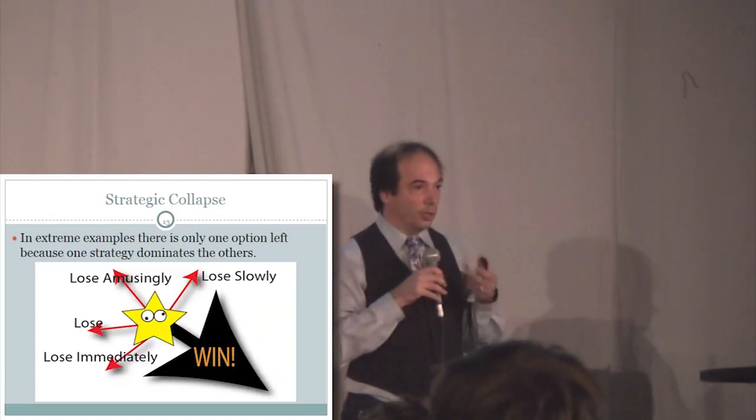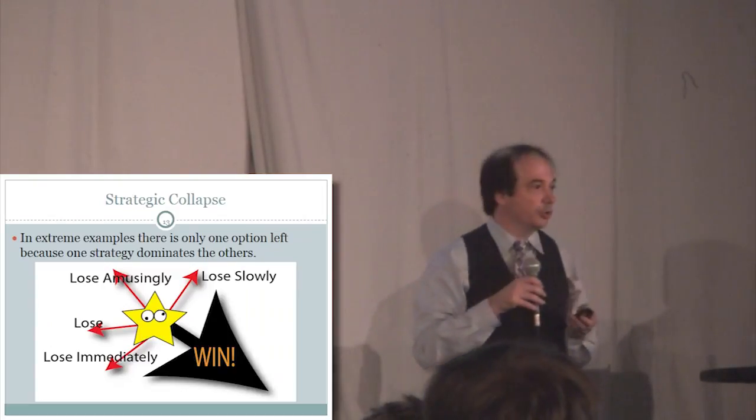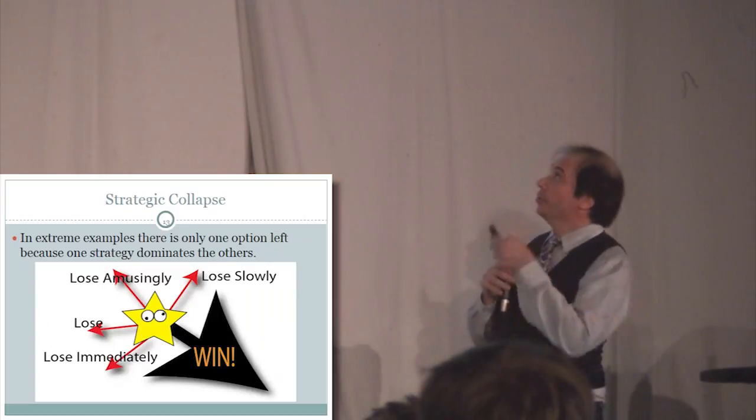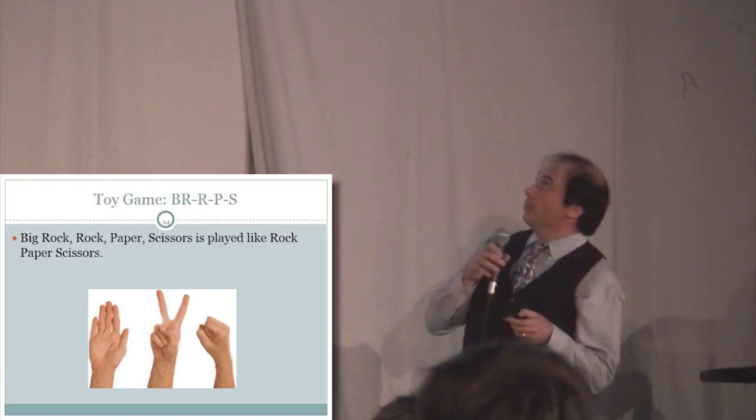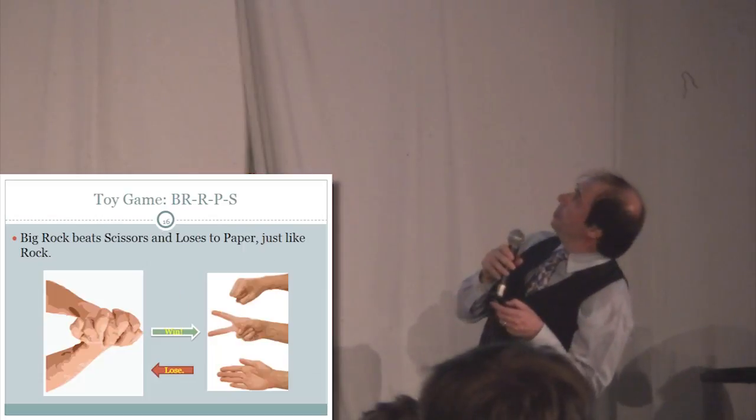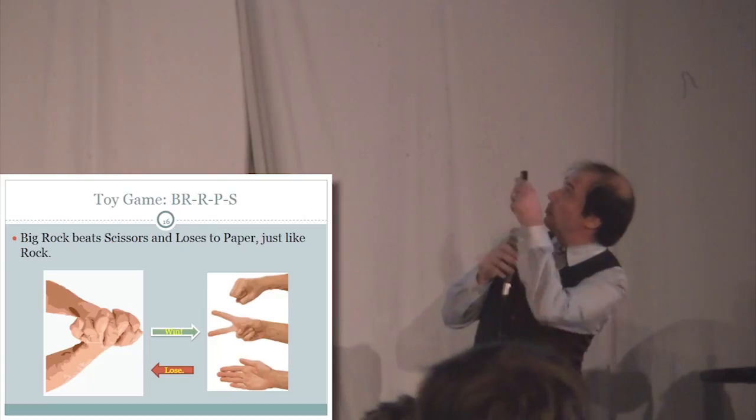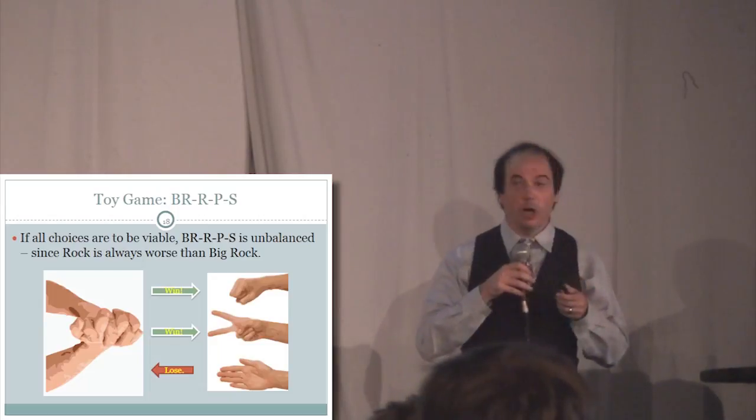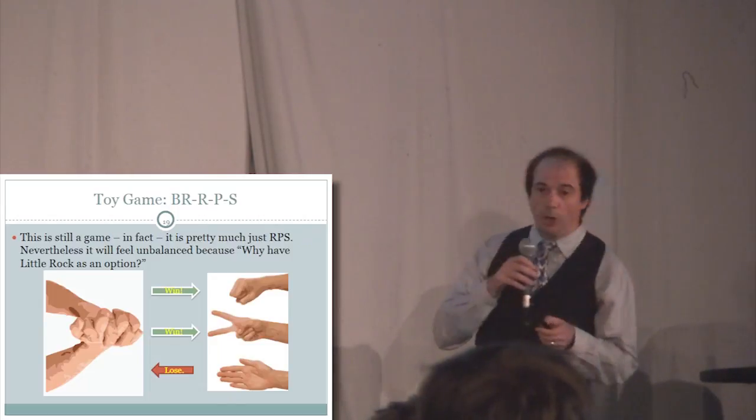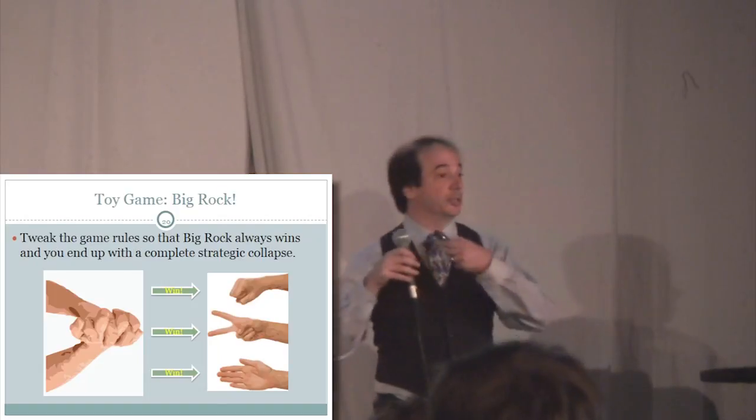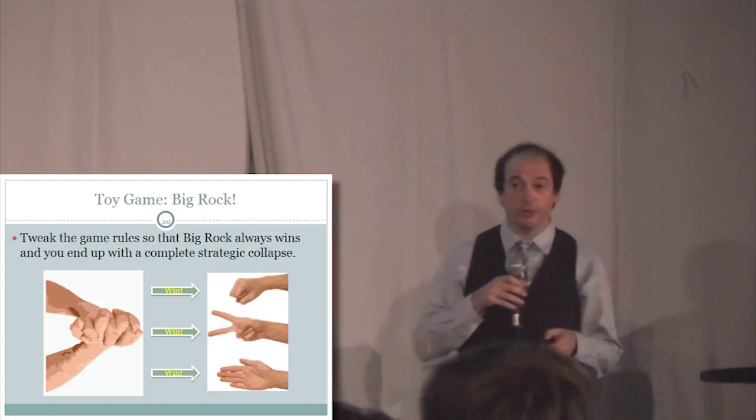This is particularly bad when there's one strategy that works and the others just don't work at all. I like to construct toy games to illustrate. These are games you don't want to play because they're usually pretty bad, but they demonstrate a point. In this case, this is Big Rock. Big Rock works just like rock-paper-scissors, except big rock beats rock. The reason why this game would be considered unbalanced is if you want to use rock, you'd ask yourself, why is rock in the game anyway?